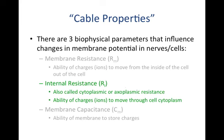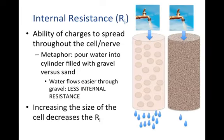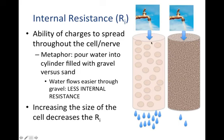Internal resistance, or R sub I, refers to the ability of charges to spread through the cell or nerve. A useful metaphor: imagine two faucets attached above two different cylinders — the left filled with gravel, the right filled with sand. With the same current of water entering each, gravity pulls the water down in both cases, but the cylinder with gravel allows far more water through than the one with sand. We would say the cylinder with gravel has lower internal resistance, and the sand has higher resistance because it's more difficult for current to pass through.